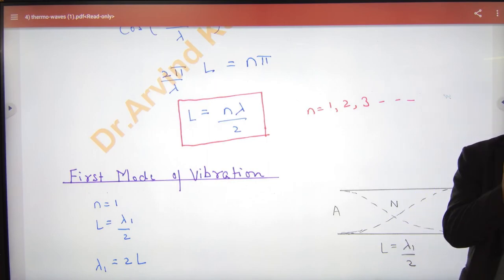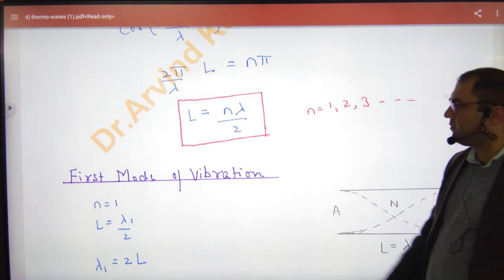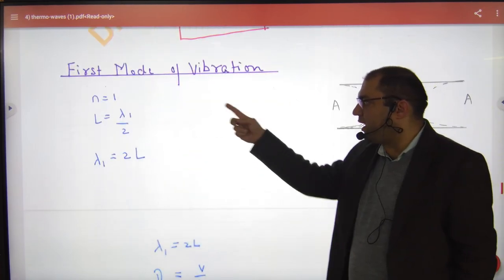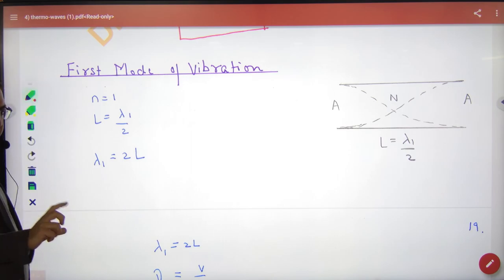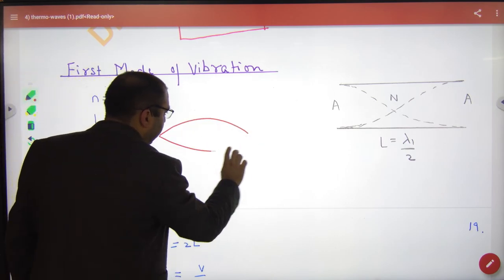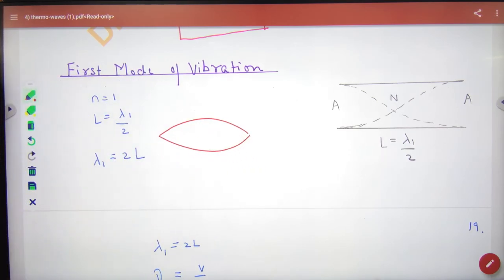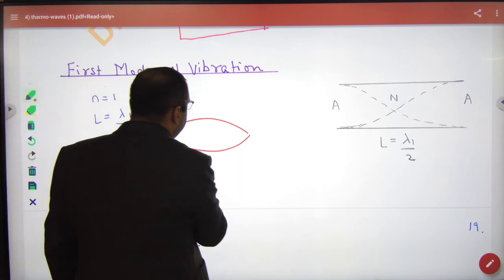Now first mode of vibration. First mode of vibration, N is 1. Put 1, so the first wavelength is lambda 1 by 2. Lambda means complete wave, lambda by 2 means 1 loop. One loop means lambda by 2.